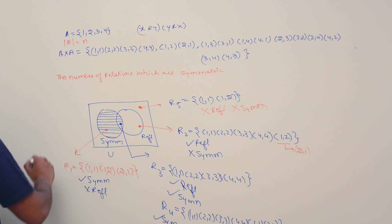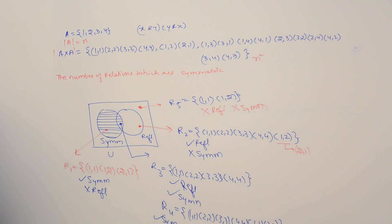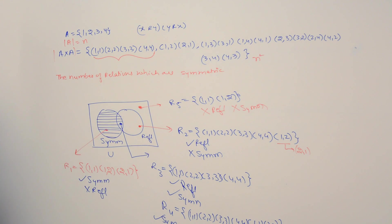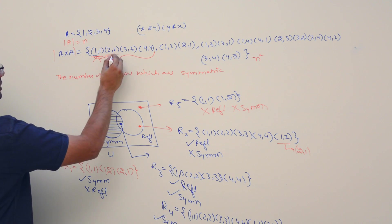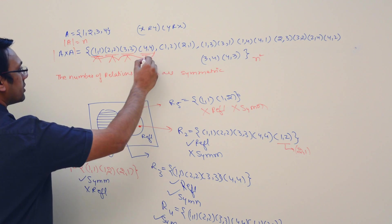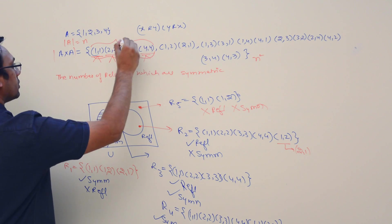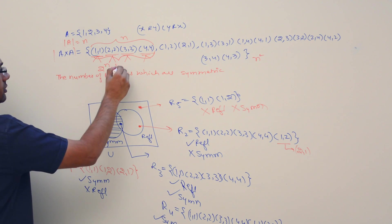If the cardinality of set A is n, then the cardinality of A cross A is n squared. For the diagonal elements — (1,1), (2,2), (3,3), (4,4) — if a relation has to be symmetric, for each of these n elements we have two choices: either include the element or not. So we have 2 raised to the power n choices for these elements.